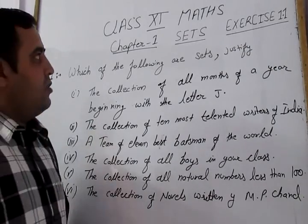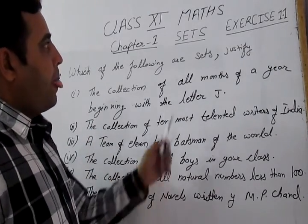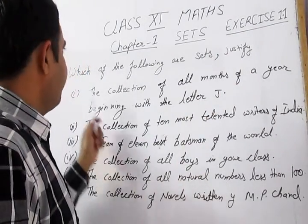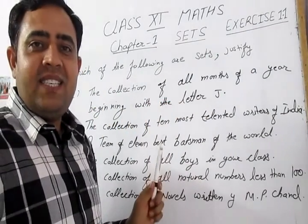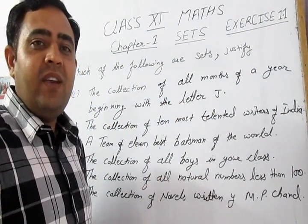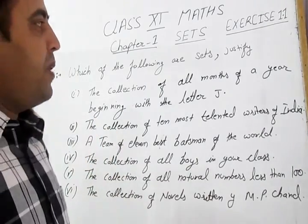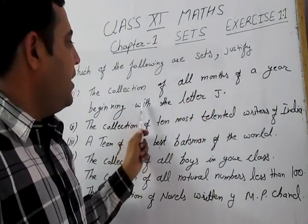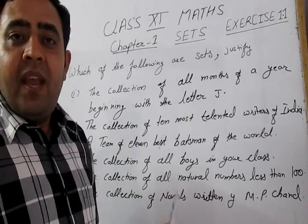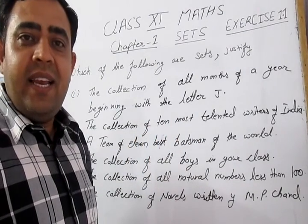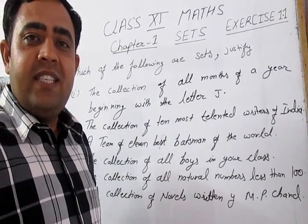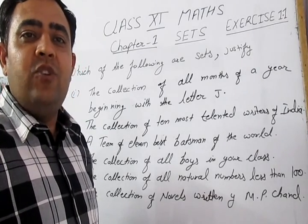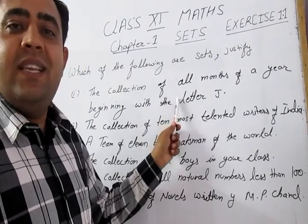Chapter 1 Sets, Exercise 1.1: which of the following are sets? First part: the collection of all months of a year beginning with the letter J. It is very clear that with the letter J there are three months in a year — January, June, and July. Therefore, yes, it is a set.